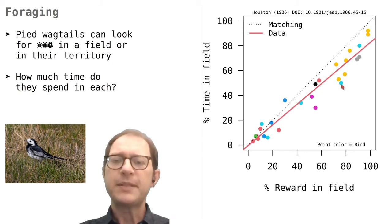So if you take for example this light blue dot, that comes from a bird that was getting over 70% of its reward in the field but was spending there only about 50% of the time. This points out that the birds might have had other reasons for spending time in their territory than just the amount of food found there. For example, some time in the territory is spent not foraging but defending it from intruders.